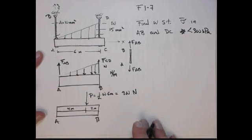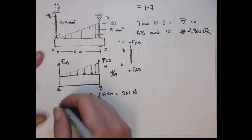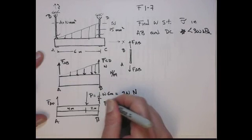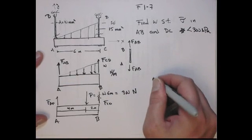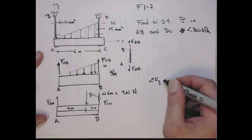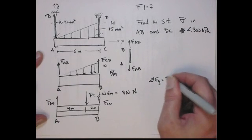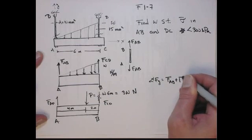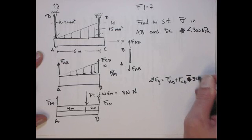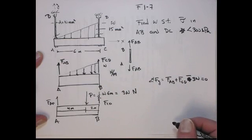All right, so now we can do sum of forces in the y-direction. Let's draw these forces, FAB, FCD. So we do sum of forces in the y-direction. Sum of forces in the x gives me nothing, obviously. So sum of forces in the y-direction, FAB plus FCD equals, plus, I'm sorry, I'm forgetting to make sloppy. Minus 3W, because it's a downward force, that's P, has to go to zero.